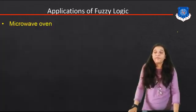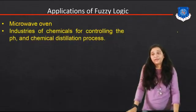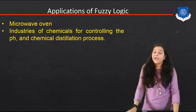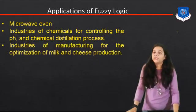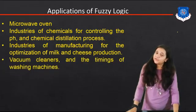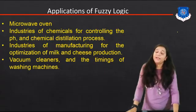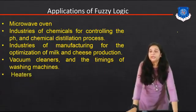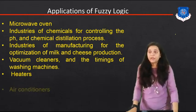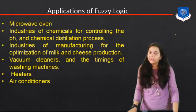The different applications where fuzzy logic is used include: microwave ovens to set temperature; the chemical industry for controlling pH and the chemical distillation process; the manufacturing industry for optimization of milk and cheese production; vacuum cleaners and the timing of washing machines; and also heaters and air conditioners. These are the applications where we use fuzzy logic systems.